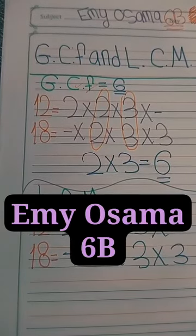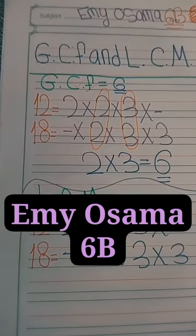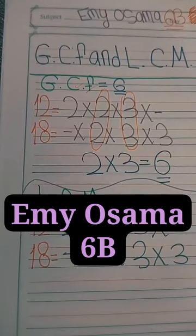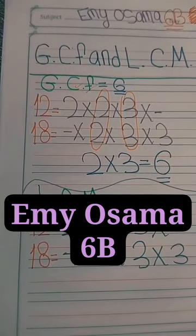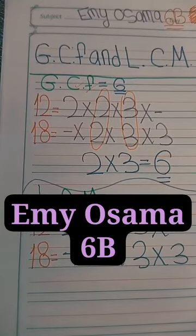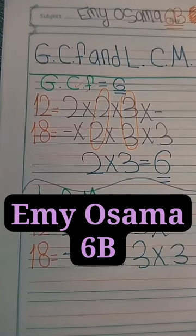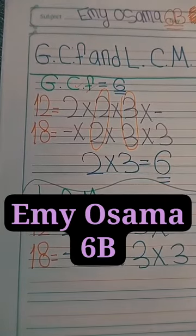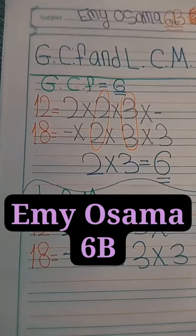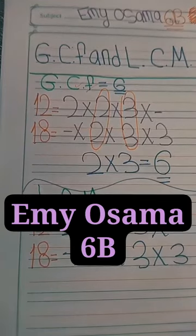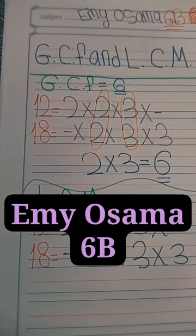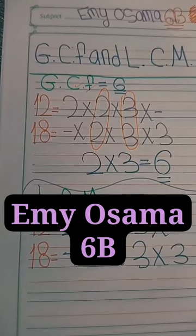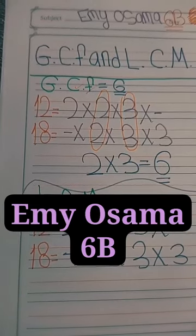And for 18, I choose 2 and 3 and 3. It's also up to you — you can choose 9 and 2, 6 and 3, or 1 and 18. All these are correct, none of them are wrong. But for me, I also prefer to find the prime numbers.